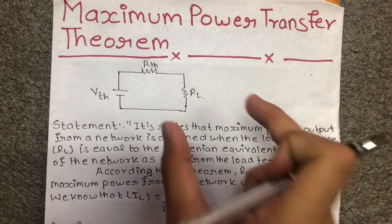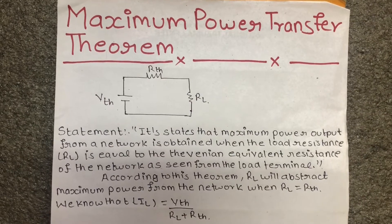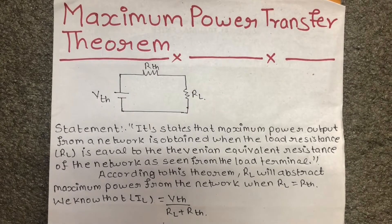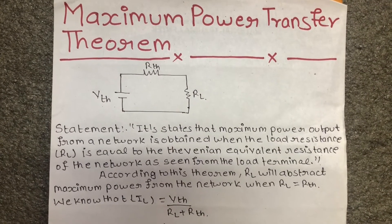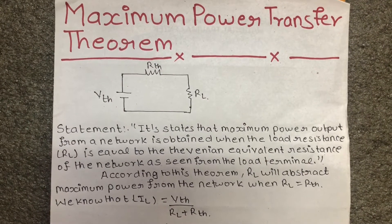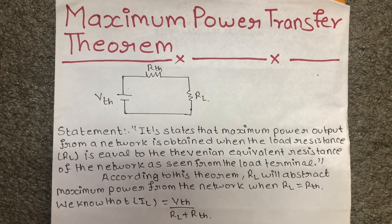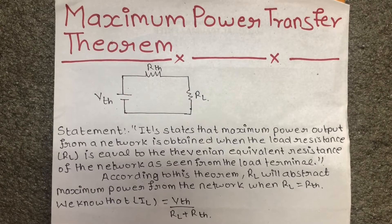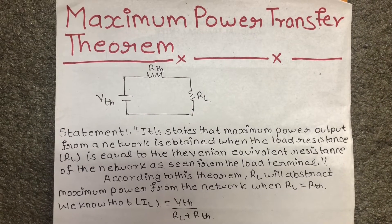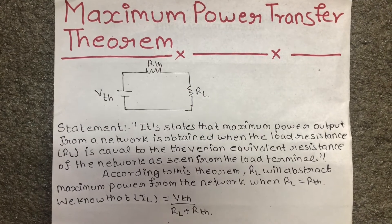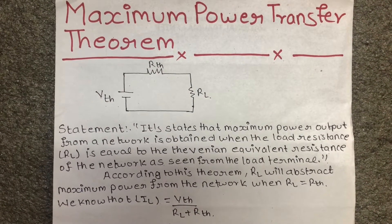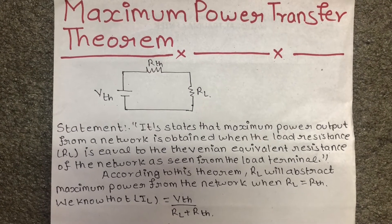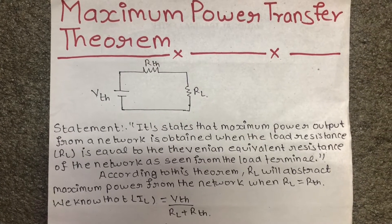The Maximum Power Transfer Theorem states that the maximum power output from a network is obtained when the load resistance RL is equal to the Thevenin equivalent resistance of the network as seen from the load terminals.